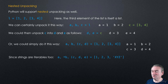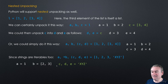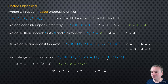Since strings are iterables, nested unpacking works with them too. For example, given [1, [2, 3], 'xyz'], writing A, *B, (C, D, E) = ... assigns 1 to A, [2, 3] to B as a list, and then unpacks 'xyz' into C='x', D='y', E='z'. So A=1, B=[2,3], C='x', D='y', E='z'.